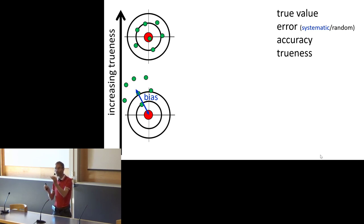We say there is a bias, which means there is a systematic deviation, a systematic component in your error values. And in the upper case, the bias is much smaller. So there, the trueness is higher.